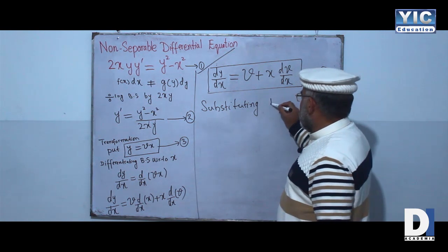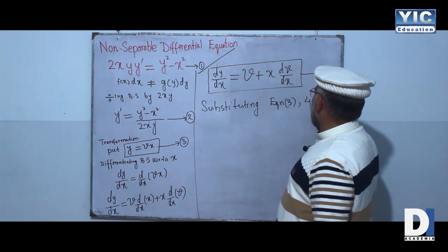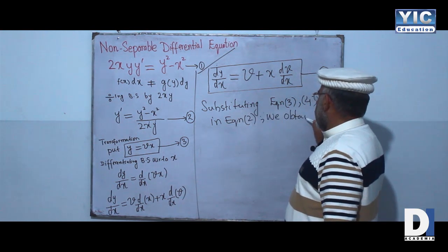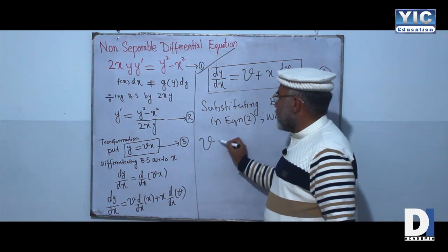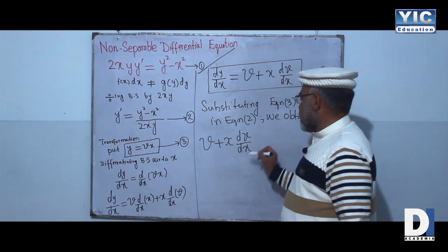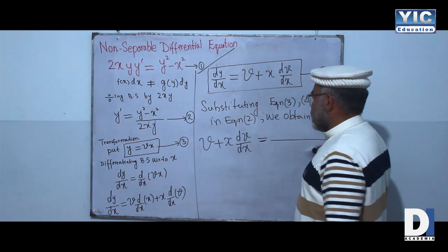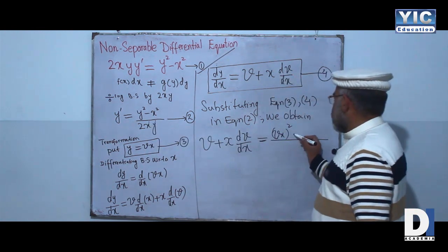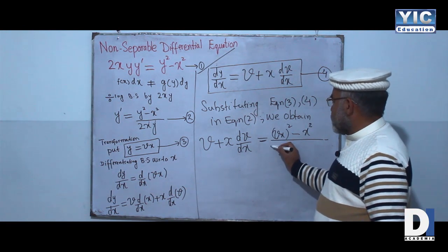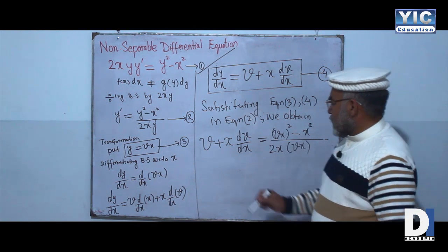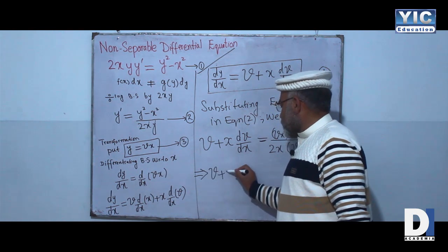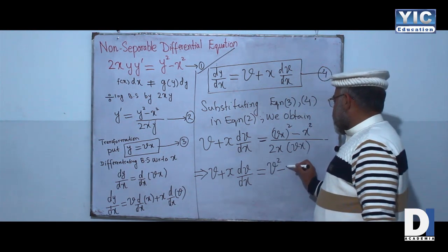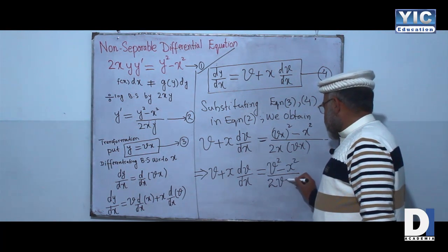Substituting equation three into equation two, we obtain: v + x(dv/dx) = (vx)² - x² all divided by 2 times x times vx. So the right-hand side becomes (v²x² - x²) / (2vx²).